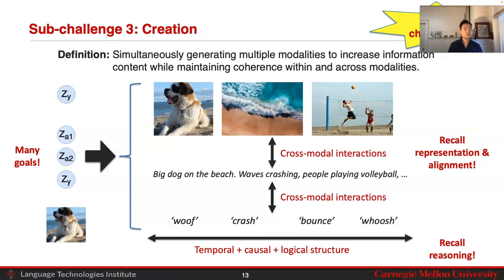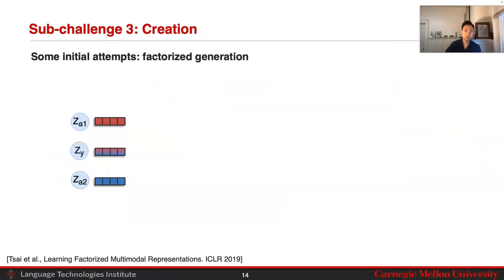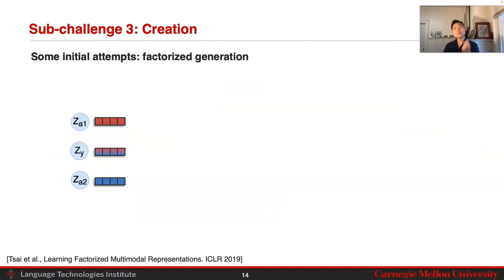But again, this is a very ideal scenario and a very big open challenge. There is almost no approach that can actually achieve this right now. I'm going to cover very quickly one example of creation, which is a very initial attempt. This attempt basically works upon factorized latent variables to generate your data.